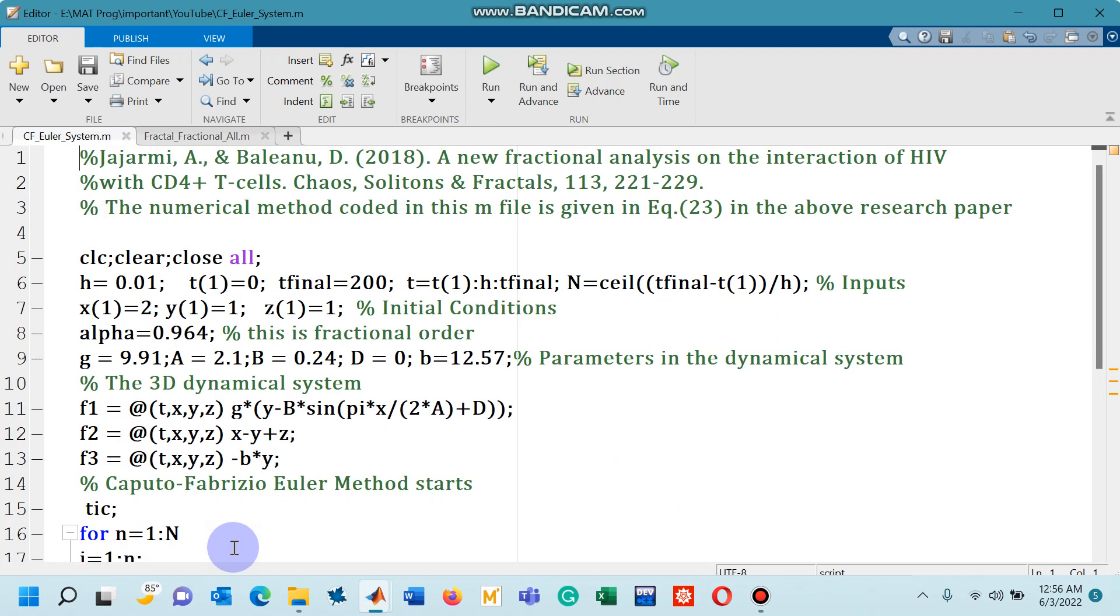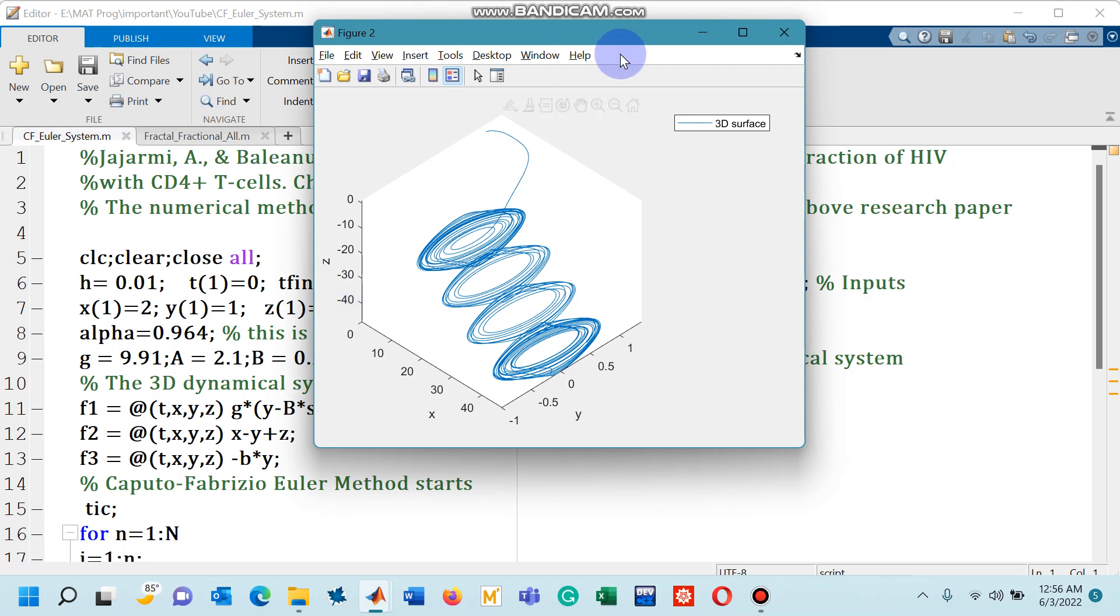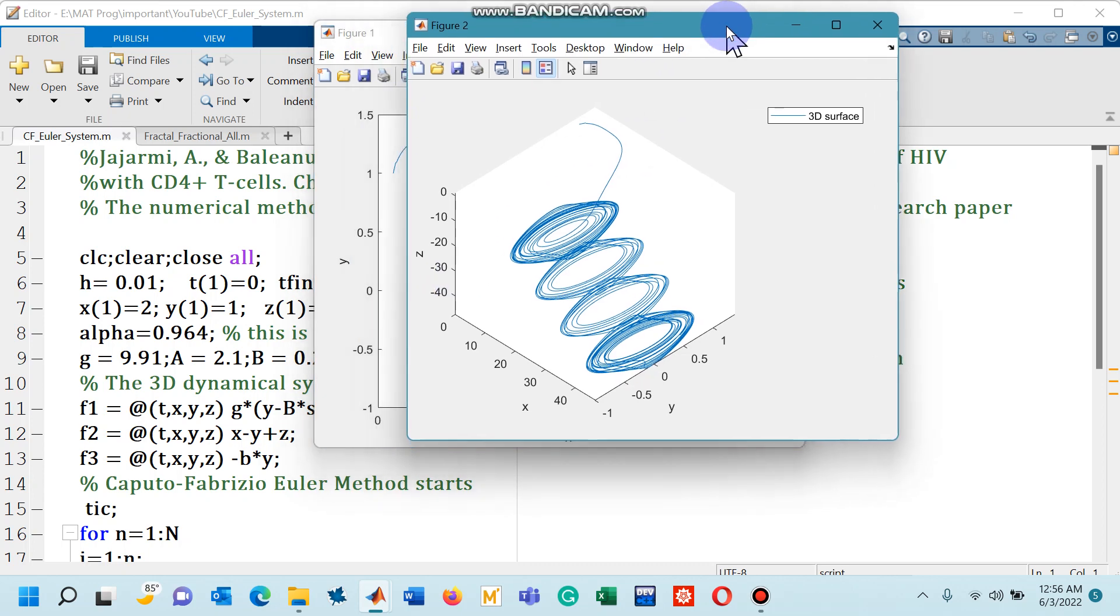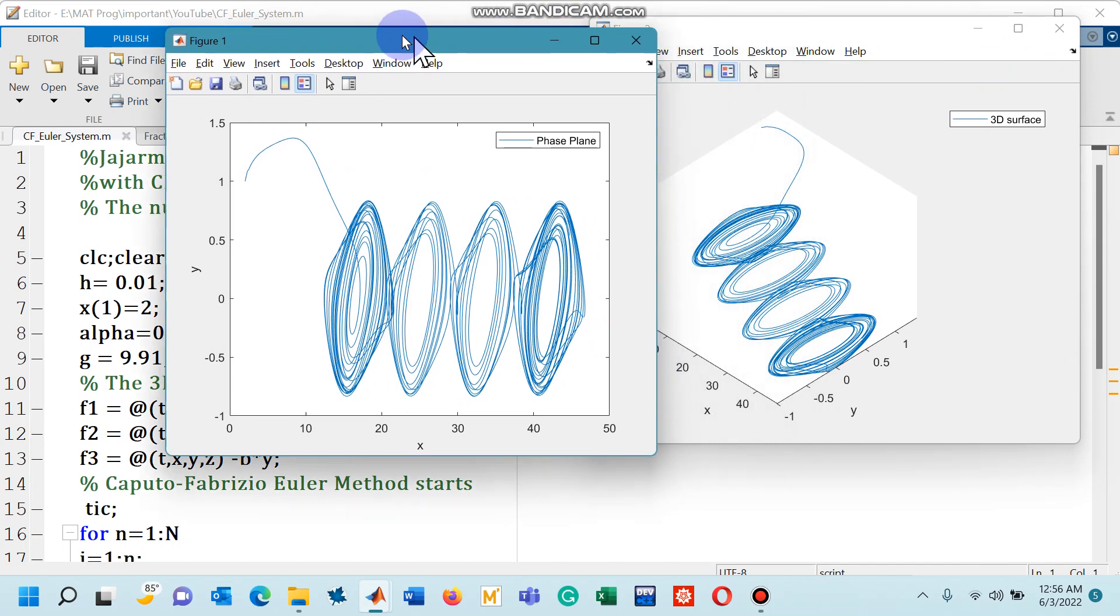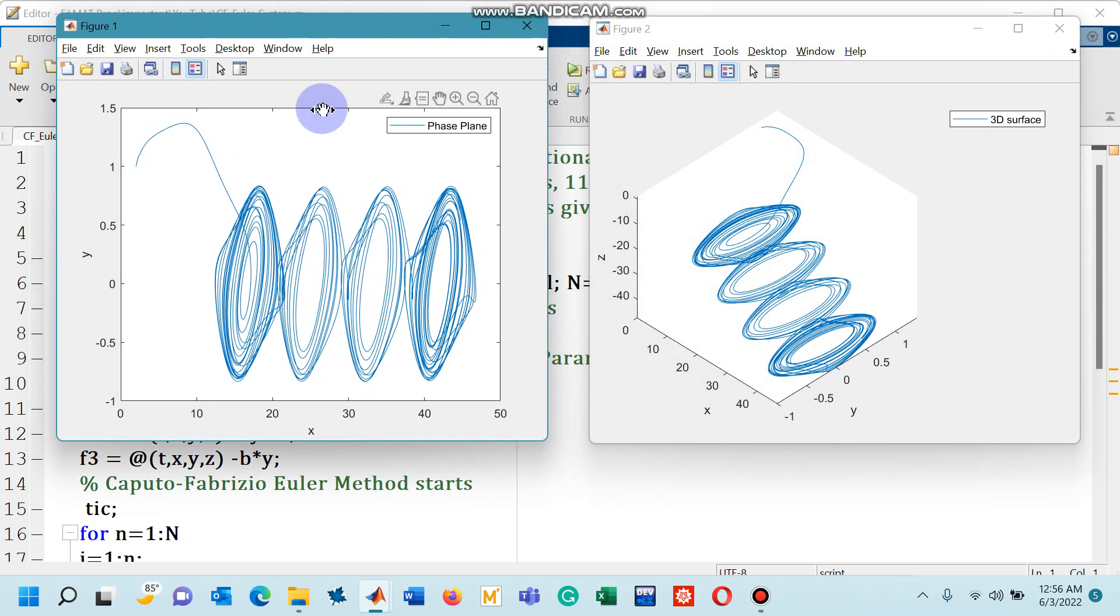So let's run this code and we need to wait for a couple of seconds because the final mesh point I have chosen as 200 so it is going to take around 10 to 15 seconds I guess to show us the pictures. So here we go, figure 2 and this is figure 1. So you can see in figure 1 phase plane, in figure 2 we have 3D surface. So it is same but in 3D.